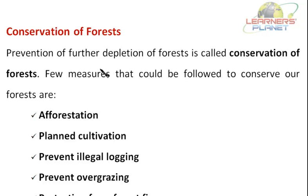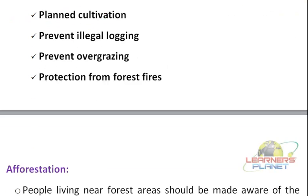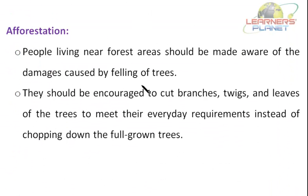There are few measures that could be followed to conserve our forests, and they are: afforestation, plant cultivation, prevent illegal logging, prevention of overgrazing, and protection from forest fires. Our first measure is afforestation — planting more trees. People living near forest areas should be made aware of the damages caused by felling of trees.